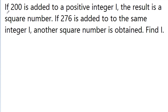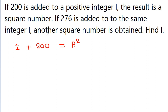In this video, we have a very nice problem. The problem is: if 200 is added to a positive integer i, the result is a square number. So if we add 200 to integer i, the result is a square — call it a squared. It is also given that if 276 is added to the same integer i, another square number is obtained — call it b squared. We have to find the value of i.